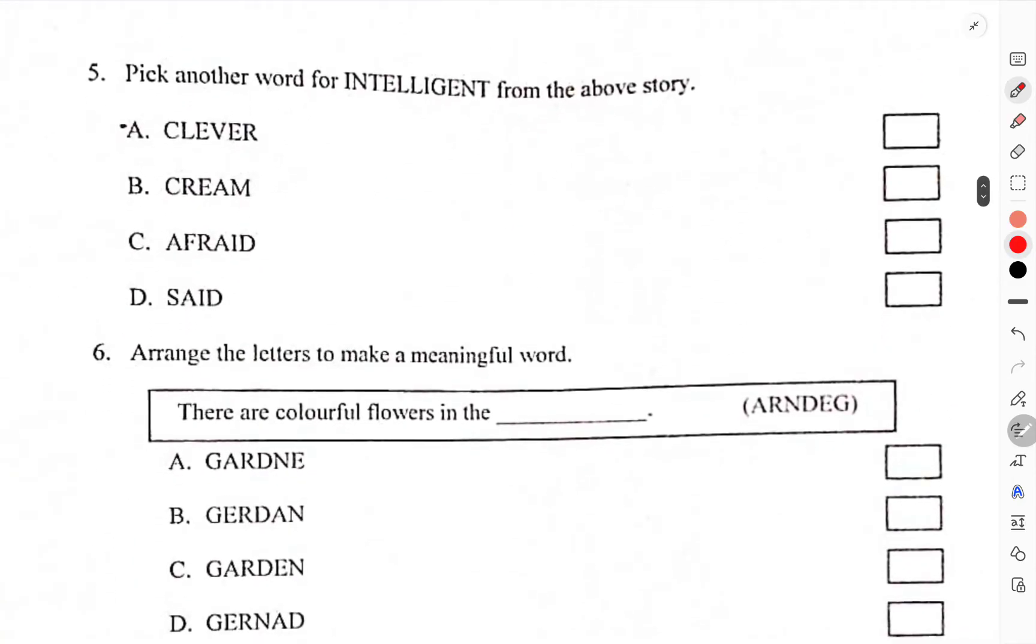Pick another word for intelligent from the above story. Intelligent should be synonym as clever. A is correct.